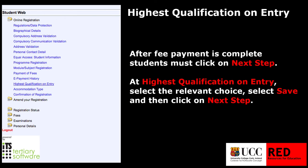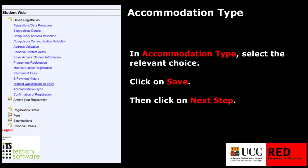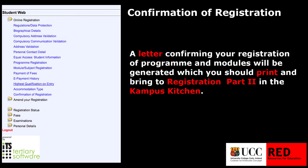If you have selected the SUSE option, you will be prompted for your SUSE number. You are nearly there. Now you just need to complete the confirmation of registration. You need to make sure that all sections, including the survey, have been completed and print this. You need this printout for registration part 2, so it is very important.